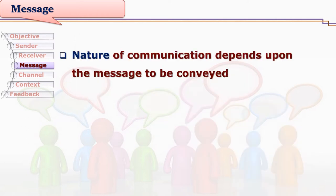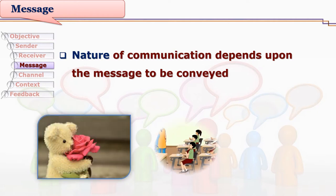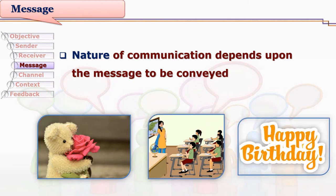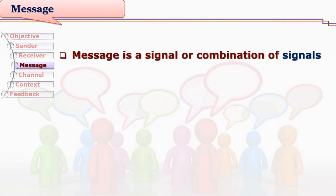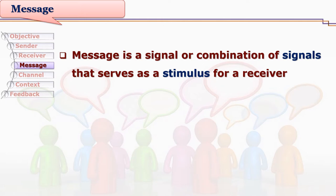Message is a very important element in communication. The nature of communication depends upon the message to be conveyed — the entire communication process changes if the nature of message changes. A message is a signal or combination of signals that serves as a stimulus for a receiver. You see or hear some signals; language itself is a combination of signals. All these signals received by a receiver work as stimuli.